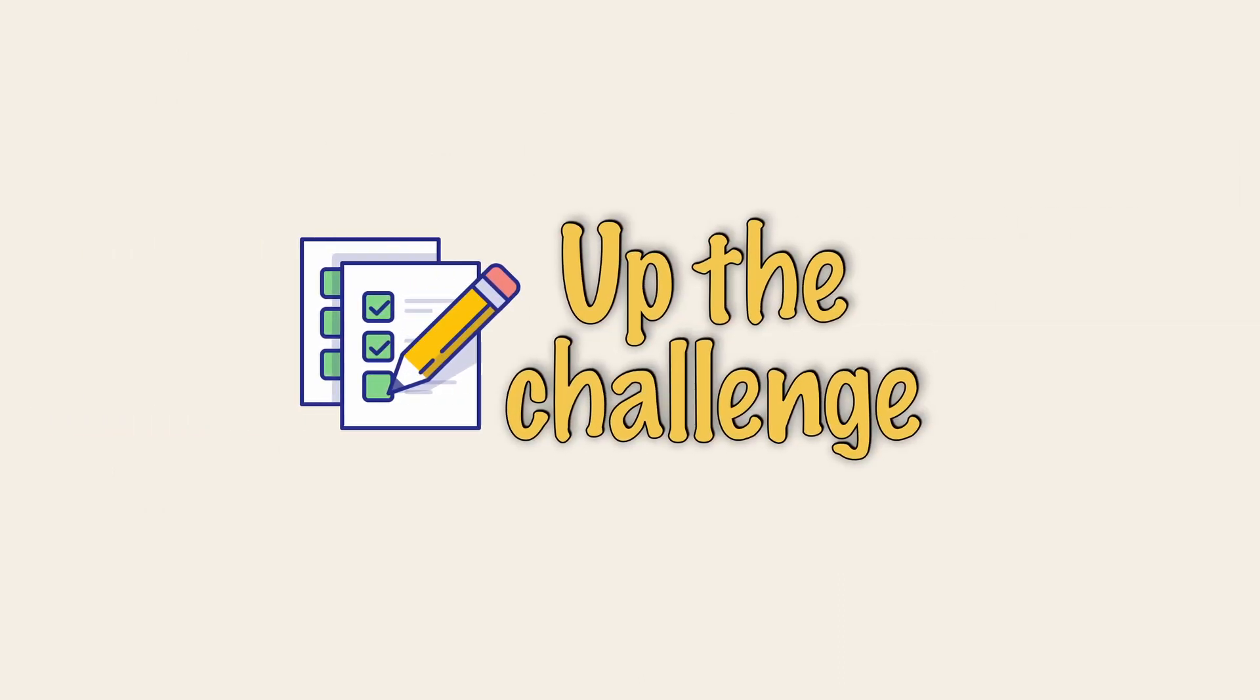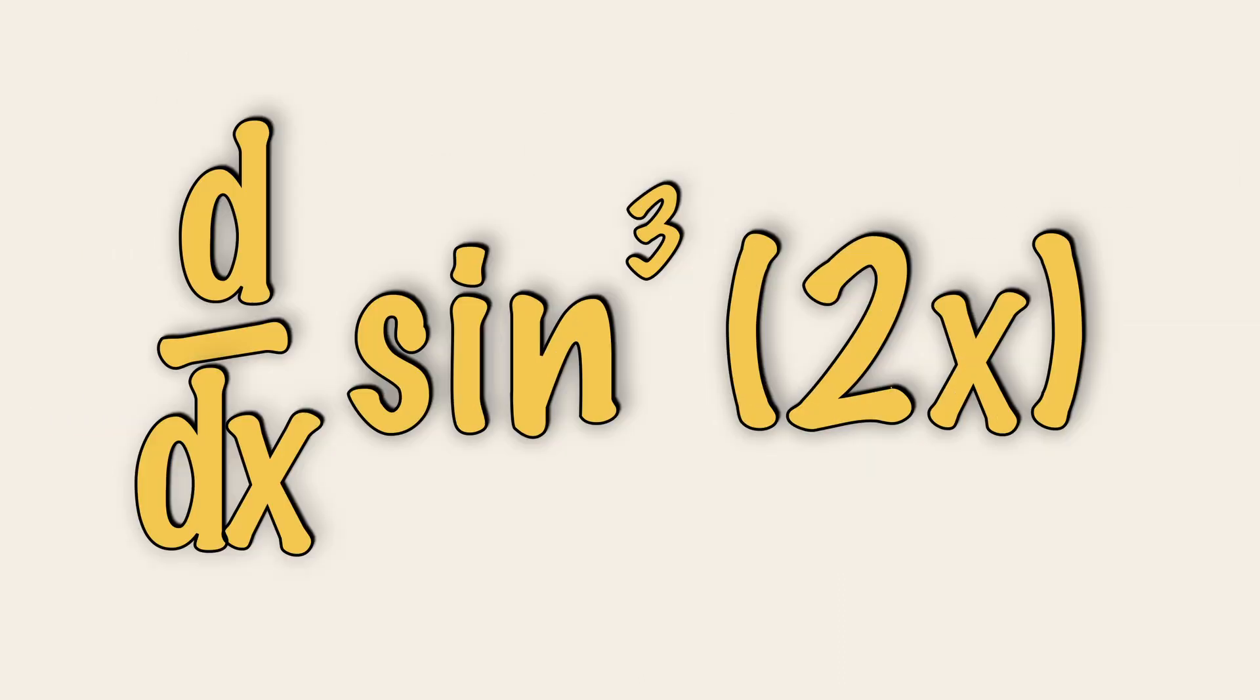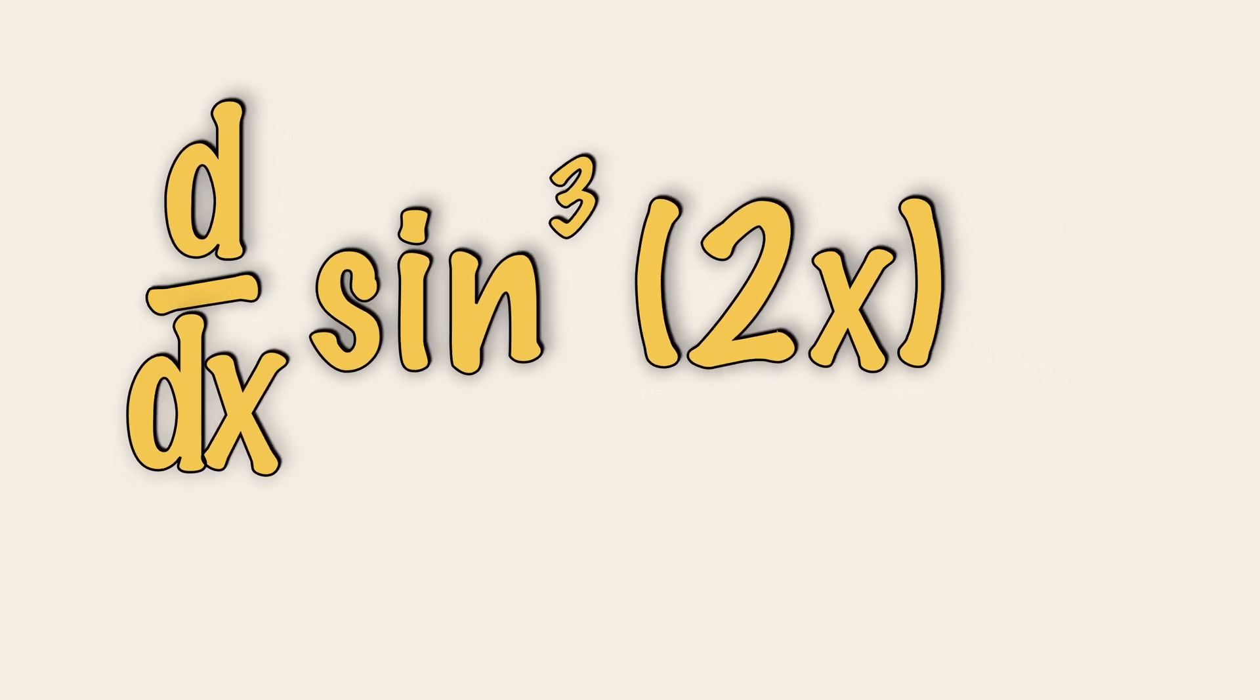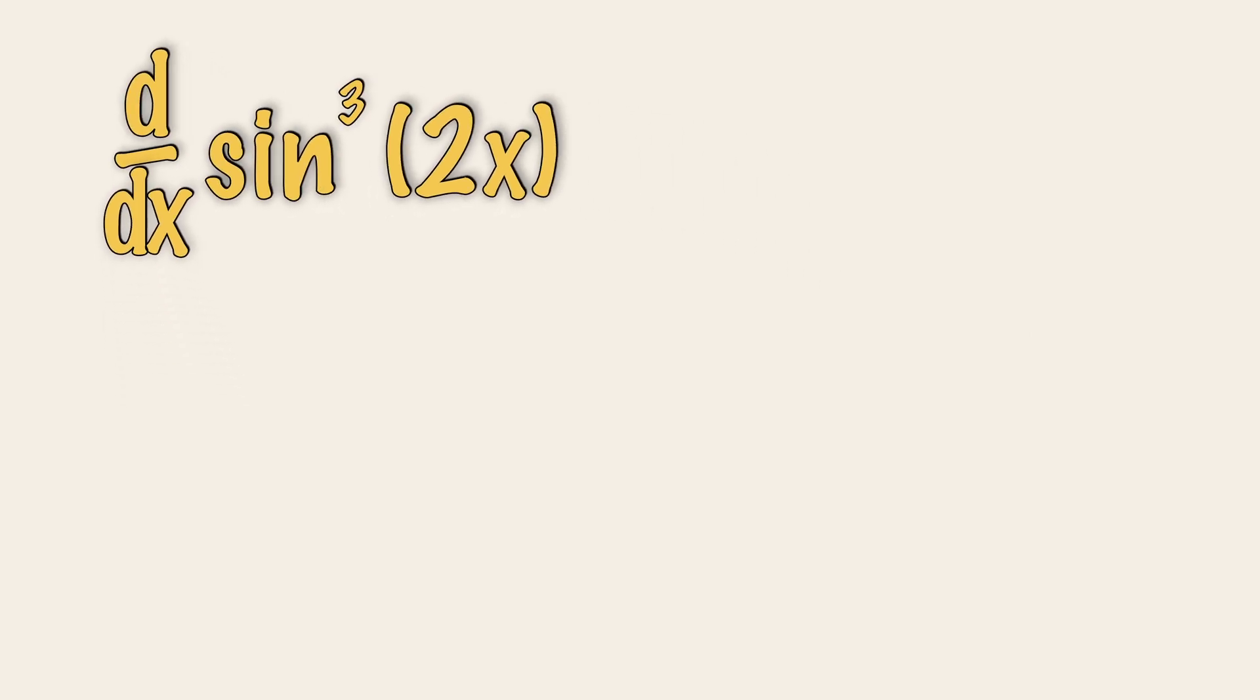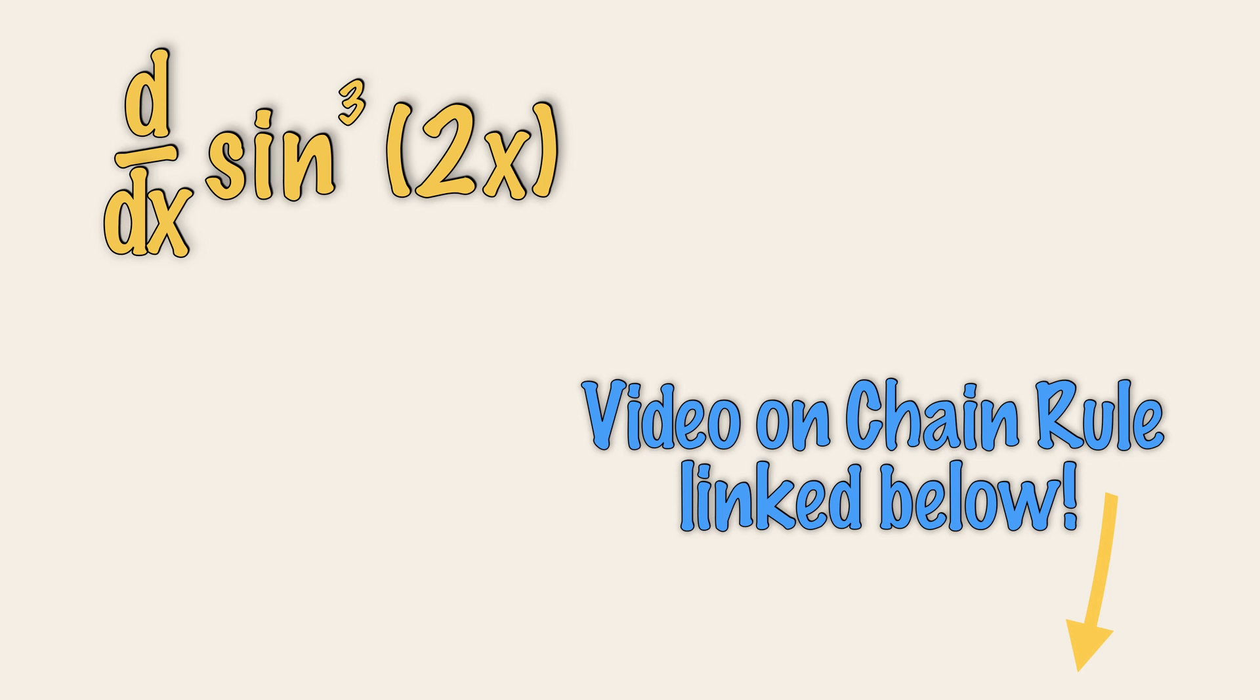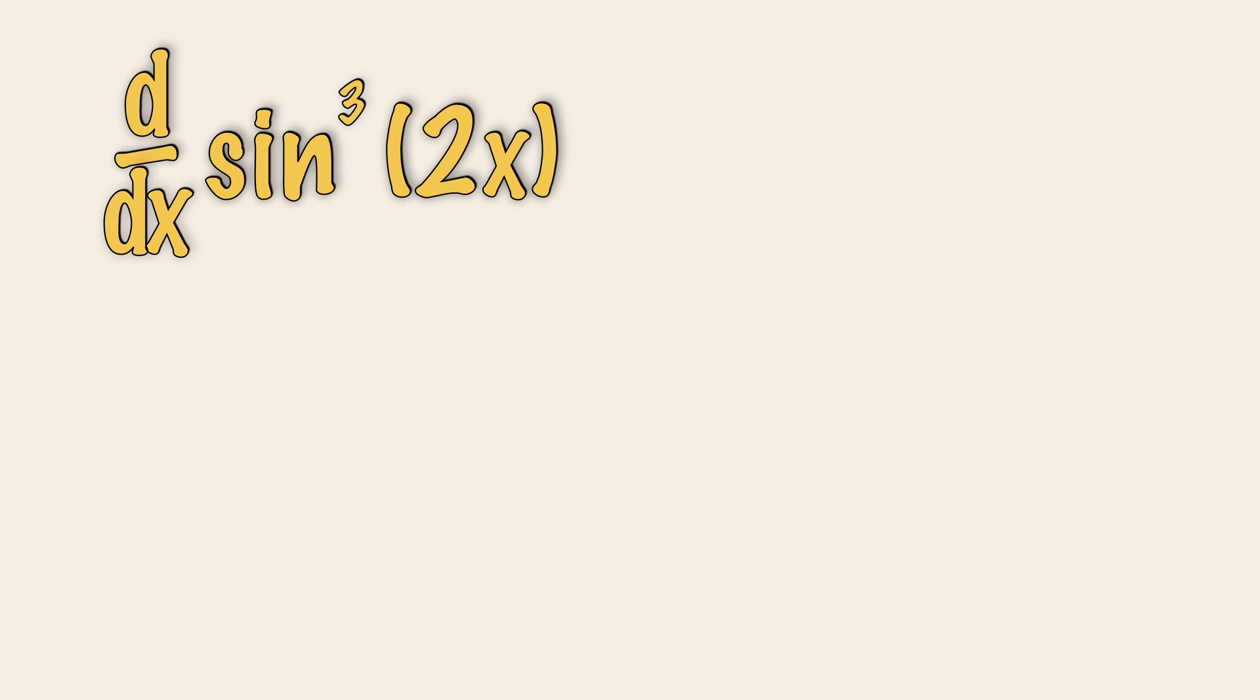Now let's up the challenge and differentiate something like this expression, where there is a power on top of the trigonometric ratio. We are going to introduce the chain rule to help us find this derivative. Now do check out the previous video on chain rule linked below if you haven't done so. So very firstly, let's bring down the power 3.